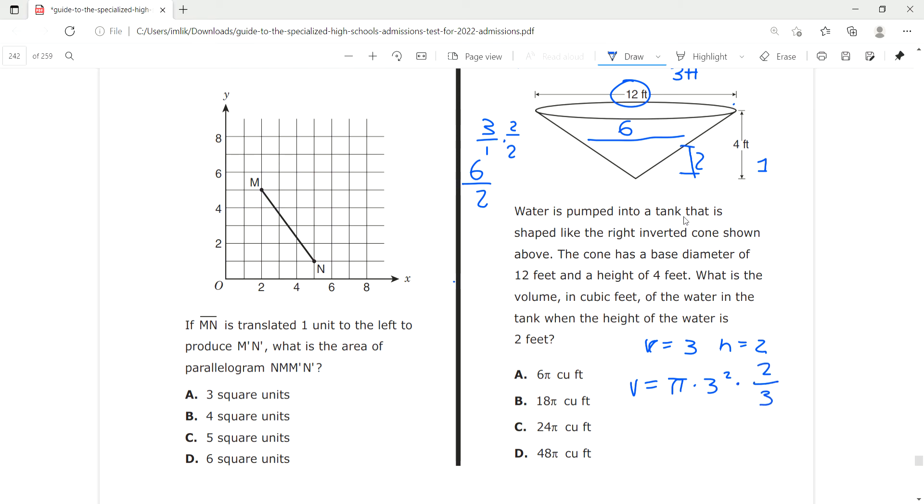V equals π times 9 times 2 over 3. Divide these: 2 by 3 cancel them out. V equals 3π times 2, which equals 6π.